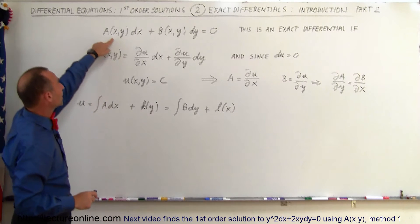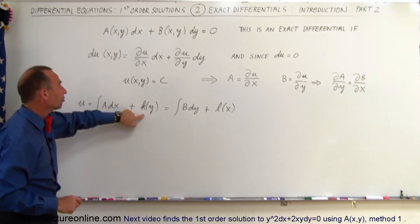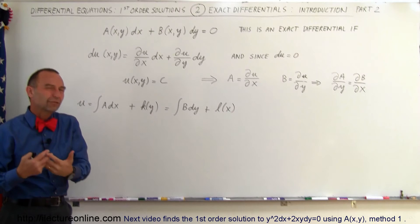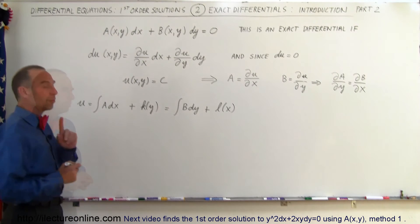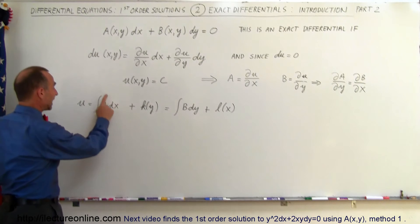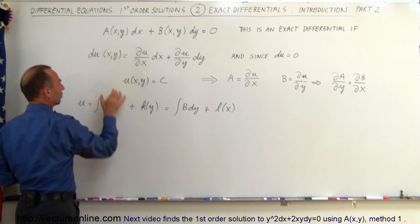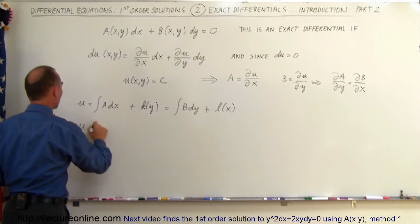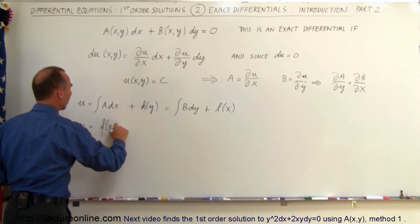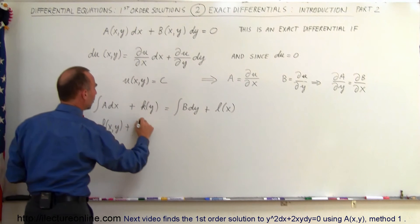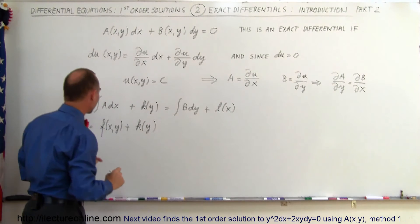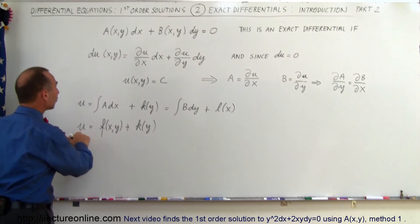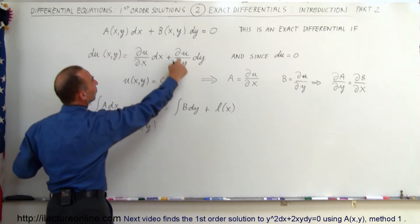We take whatever is in the integrand, take the integral of that, add some other function to it, and we know that equals u. When we take the integral of this portion of the differential equation times dx, we get some function of x and y, so u equals that function of x and y plus the still-unknown function of y. Then we take the partial of this with respect to y, and that should equal b.